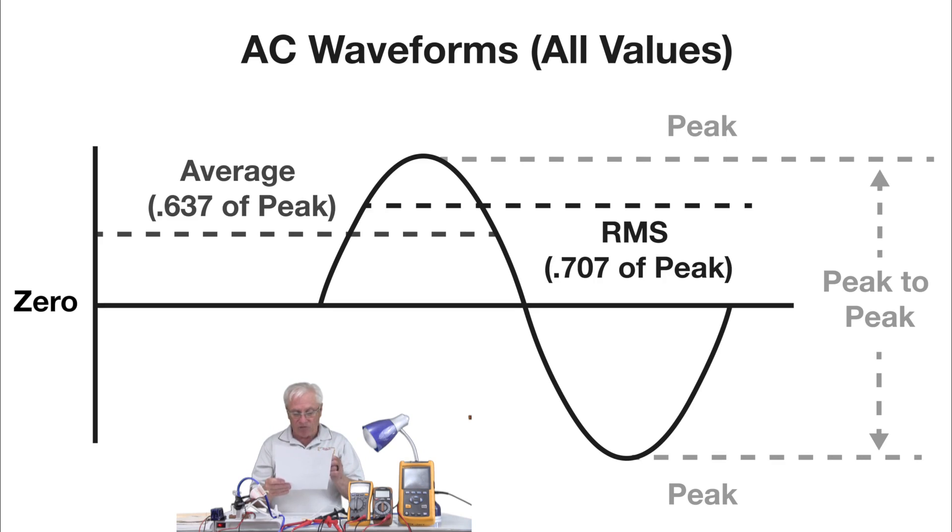RMS values are used to describe our nominal voltages, which is voltage in name only. If I say 120 volt circuit or 240 volt circuit, I'm saying that is the RMS value of it. And looking at the waveform, one thing to always remember: if we were looking at a 120 volt circuit, 120 volts would be at the RMS value, but the peak of the sine wave would be 170 volts.